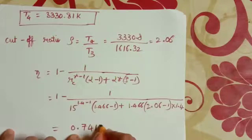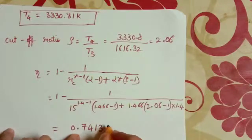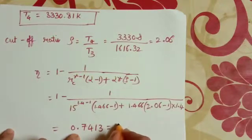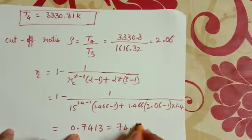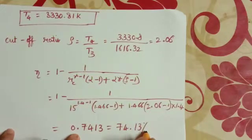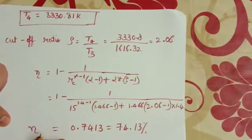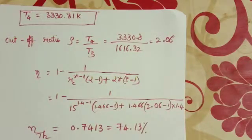That is equal to 0.7413, that is 74.13%. This is thermal efficiency of the ideal cycle.